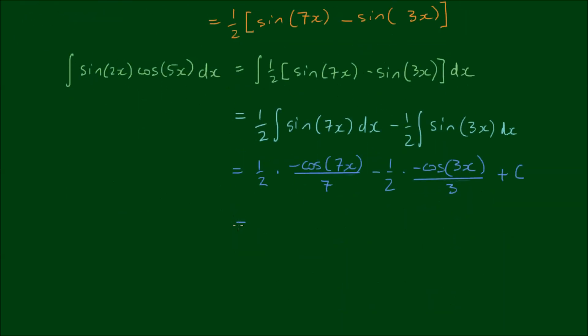So simplifying this now, we have two negatives here, which becomes a positive. So I'm going to write this as 1 sixths of the cosine of 3x minus 1 fourteenths of the cosine of 7x plus the integration constant, C.